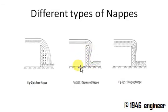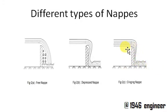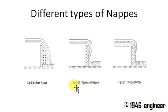The depressant nappe discharges six to seven percent more than the free nappe. The clinging nappe has no ventilation at all and discharges 30 to 40 percent more than the free nappe.